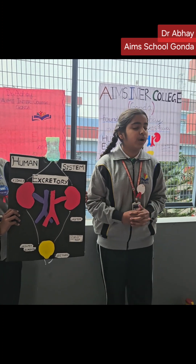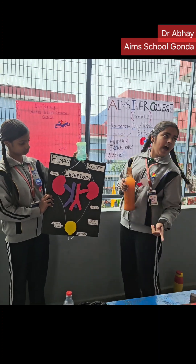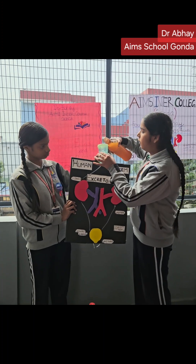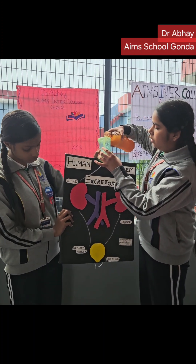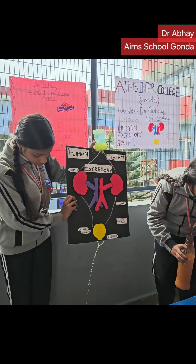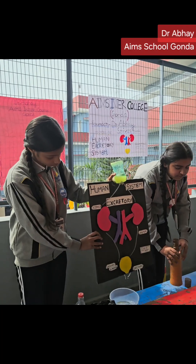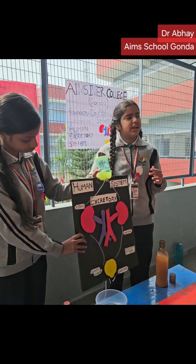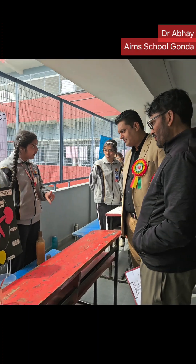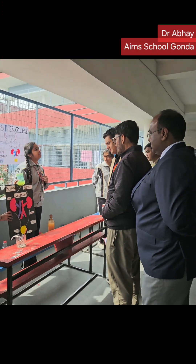Now I am going to show the working of this model. As you see, firstly we are going to enter the kidney and the kidney changes it into urine because it is an excretory outlet. With the help of the ureter, it goes to the urinary bladder and from there it goes to the urethra and out of the body.